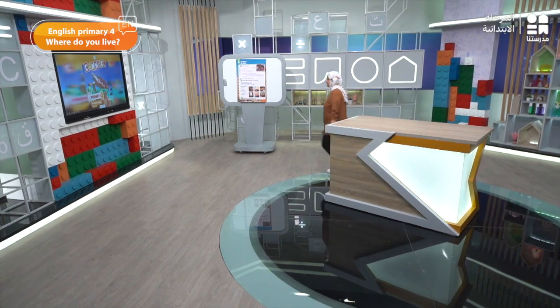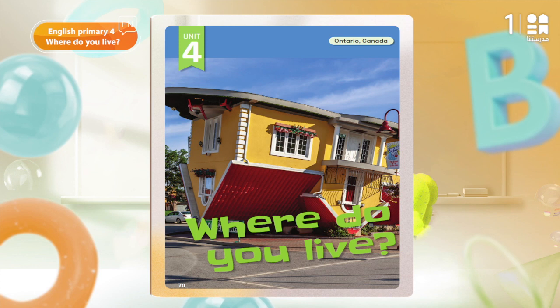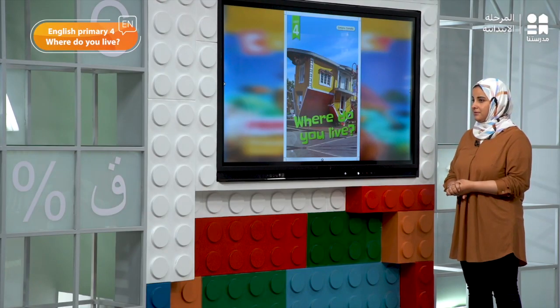يعني إيه apartment building؟ يعني شقة موجودة في building. Who lives in a house? So today we are going to talk about where do you live. Let's go to our smart board and look at Unit 4. Let's look at page 70 — look at the photo of the unusual house. What's unusual about it? يعني unusual يعني في حاجة غريبة في البيت ده. Very good — the house is upside down, so the shape of the house is upside down.